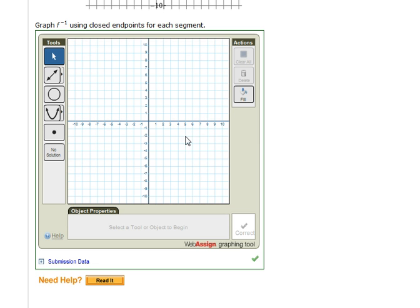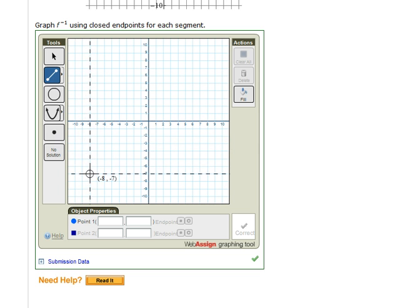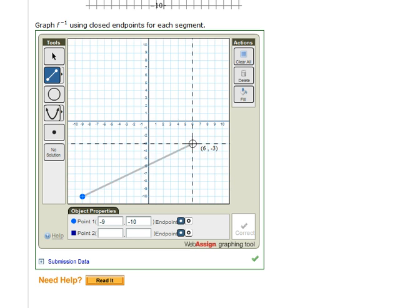Going to the graphing tool, I select the segment. Click on that, then 7, negative 3.